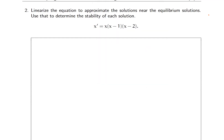In this problem, very similar to the last one, we're going to linearize the equation around the equilibrium solutions and solve that linearized equation, then use that to determine the stability of each solution. If we call this f of X, f prime of X is equal to 3x squared minus 6x plus 2. I wrote that there because we're going to need to use it.